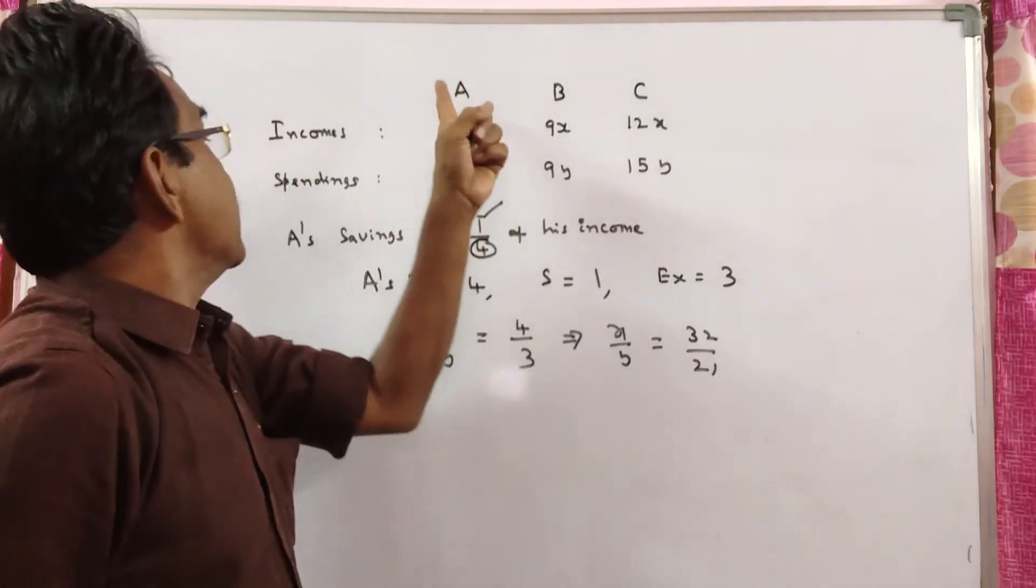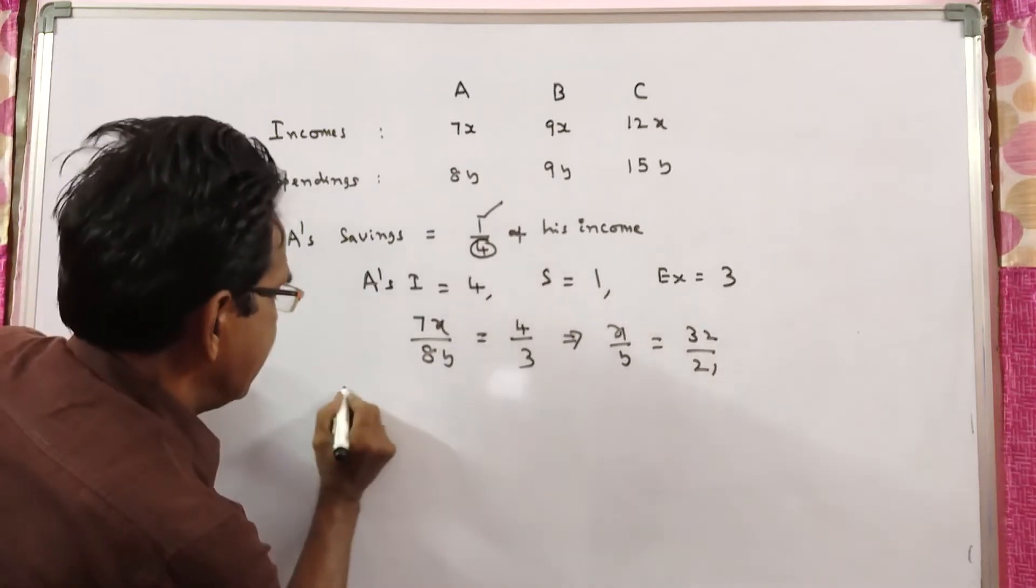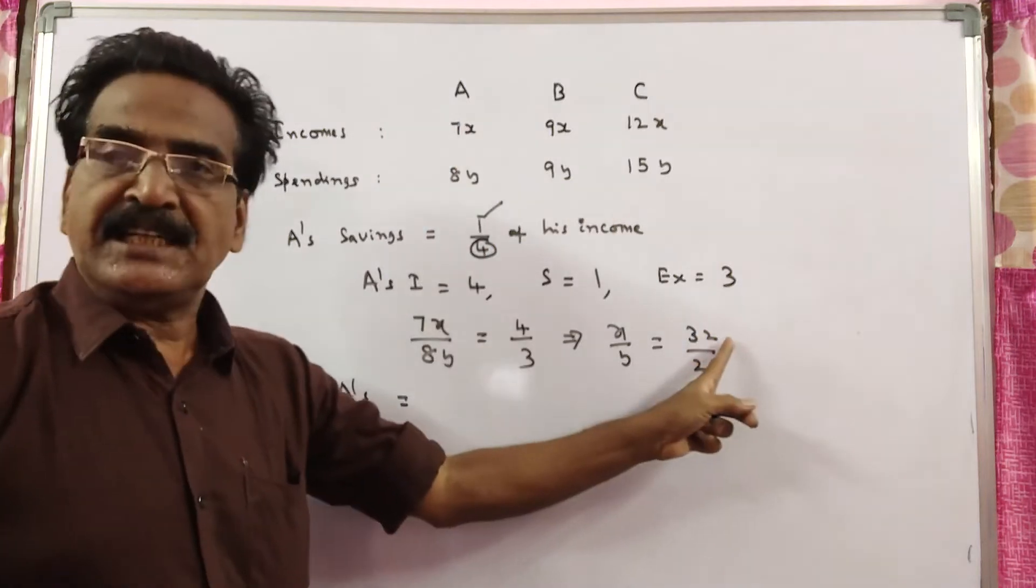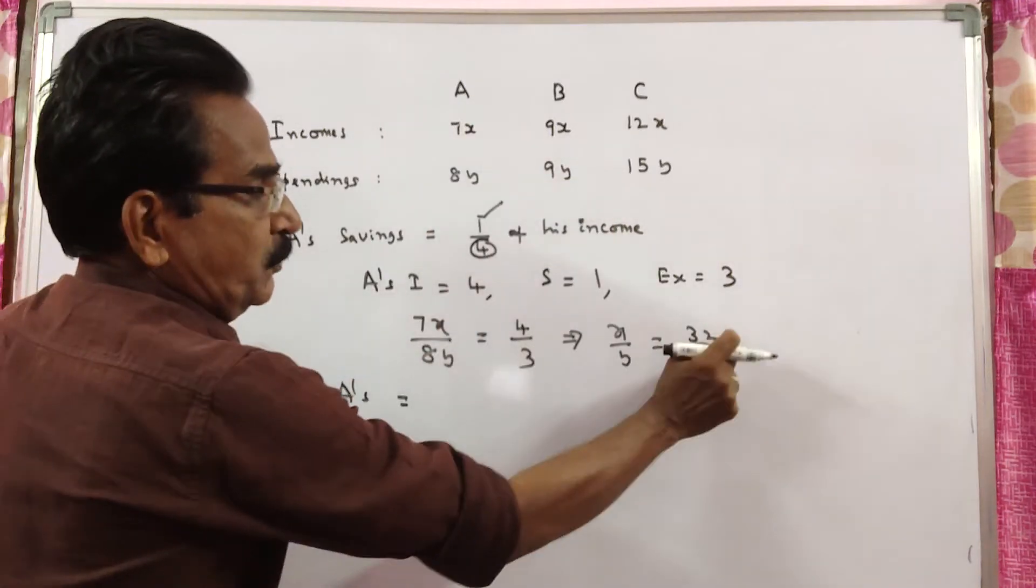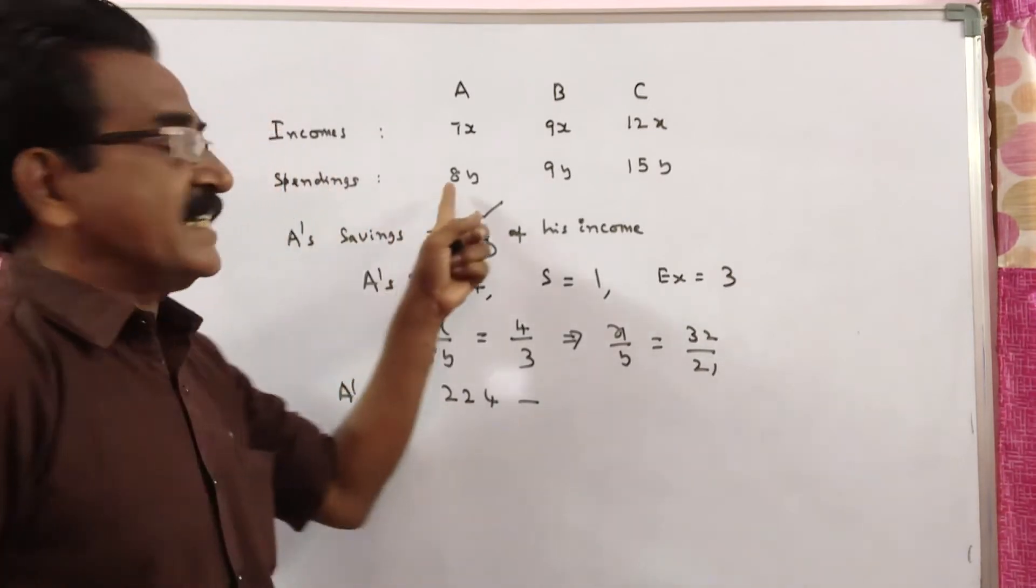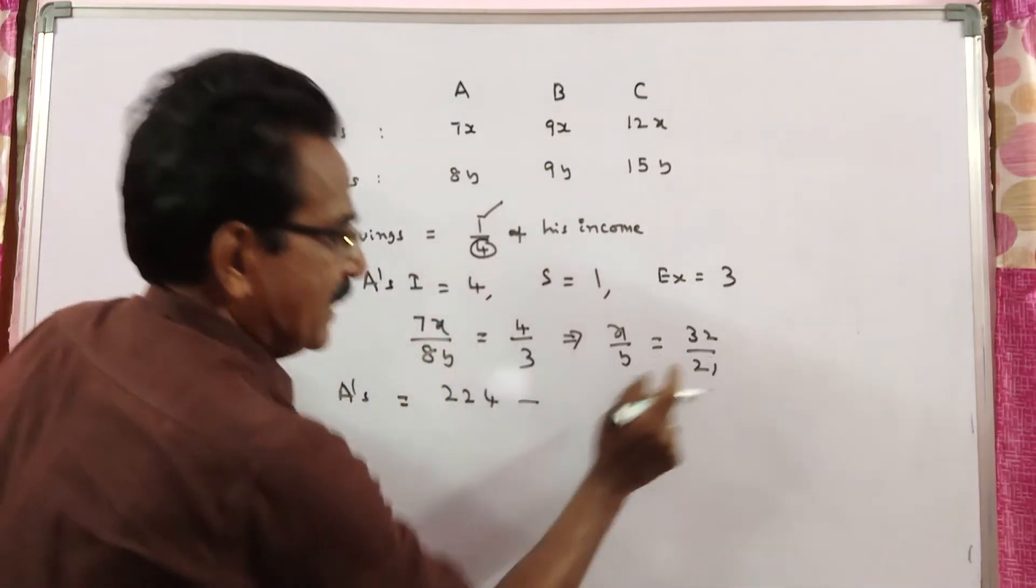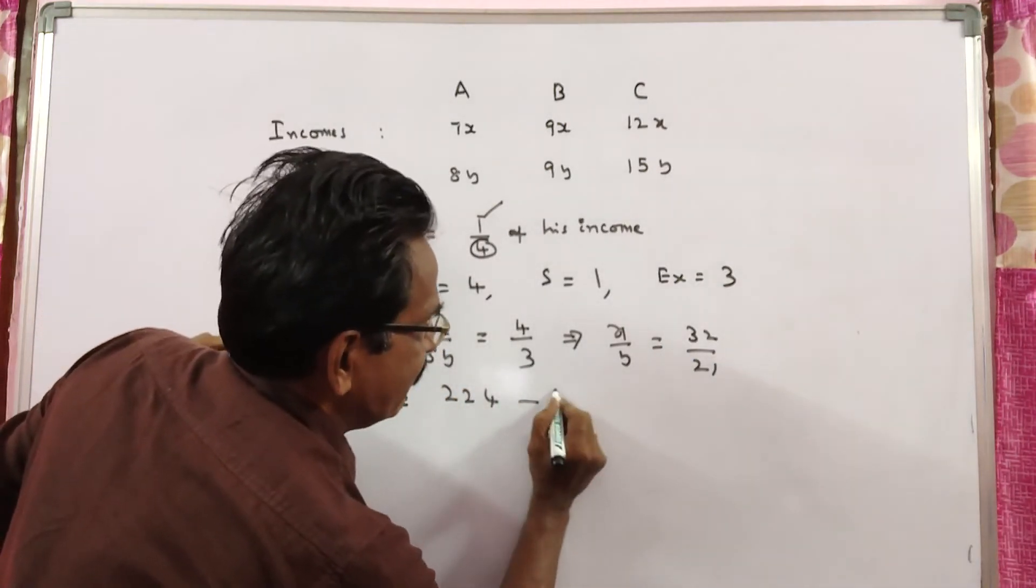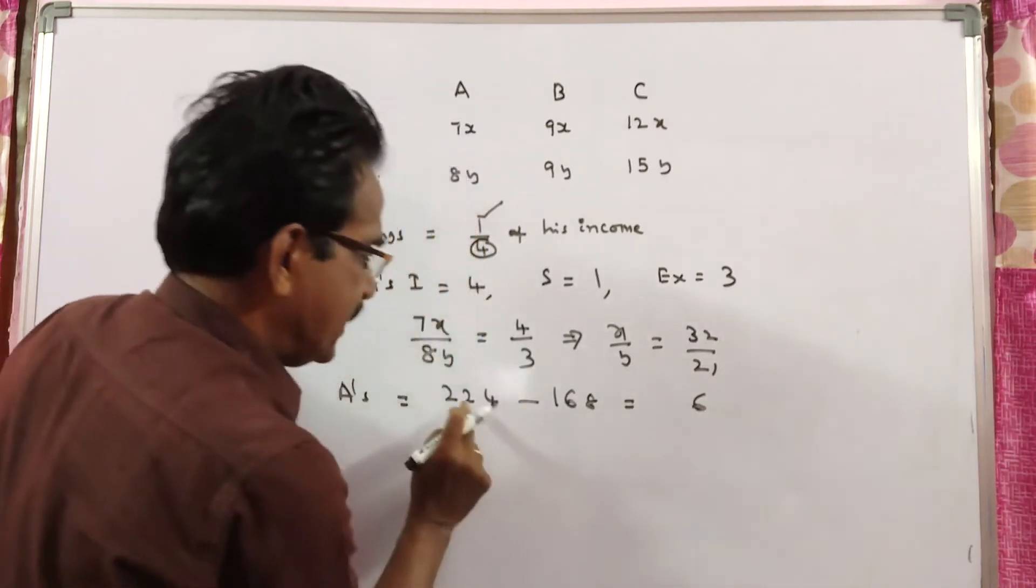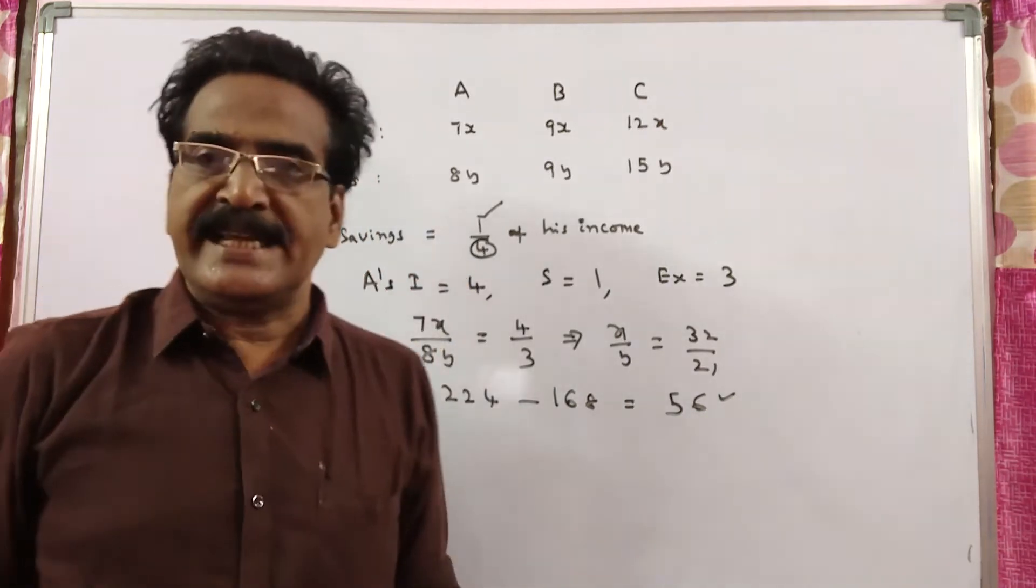Let us find A's savings. A's savings is 7x minus 8y, which equals 224 minus 168, equals 56. This is A's savings.